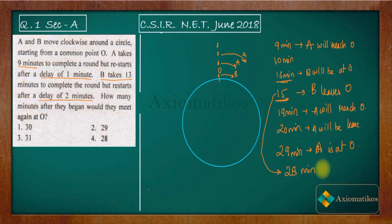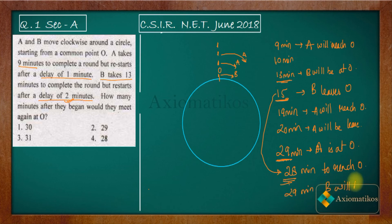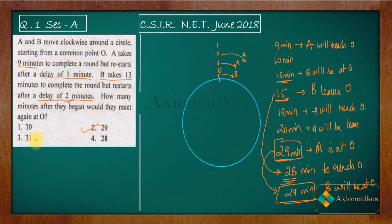B started at 15 minutes, so B will take 13 minutes more to reach O — arriving at 28 minutes. But A is not at O at 28 minutes. However, B has a 2-minute delay, so B stays at O up until 30 minutes. That means at 29 minutes, B is still at O — and at 29 minutes, A also reaches O. So they meet at O at 29 minutes, making the second option correct.